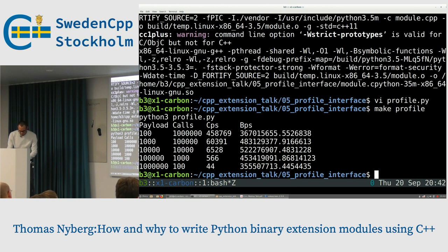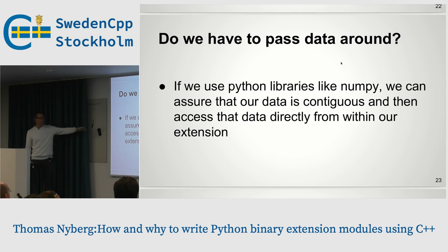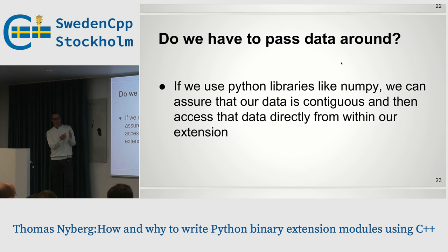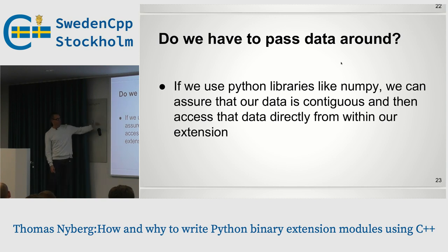Do we have to pass data around? We don't have to. A Python list is basically a vector of references to Python objects — even for doubles, each element is a pointer to a double object. What we really want is typed data in a block of memory in Python that we can access directly from C++. If we do that, we just grab pointers to the beginning and end of the data.